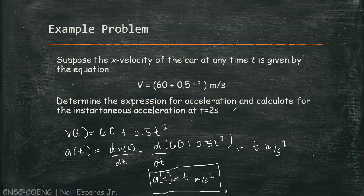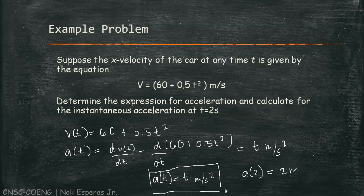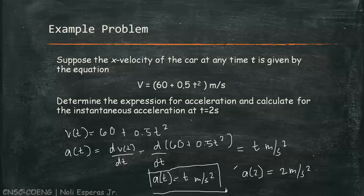Let's calculate the instantaneous acceleration at time t equals 2 seconds. Substituting the value of time, which is 2, we get an instantaneous acceleration of 2 meters per second squared.